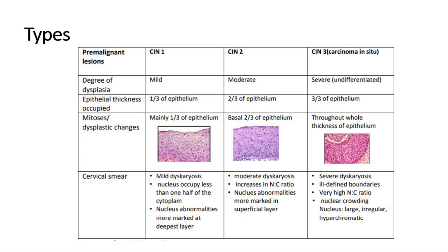CIN type 1 is a low-grade squamous intraepithelial lesion and may regress without treatment, whereas types 2 and 3 are high-grade lesions likely to persist and progress. The average time for CIN type 3, which is also a carcinoma in situ, to progress to invasive cervical cancer is around 10 to 15 years.